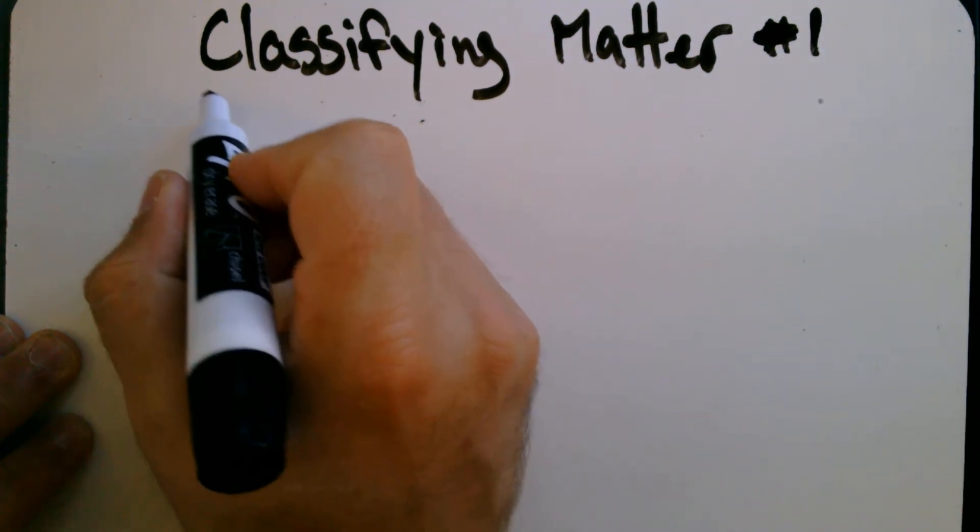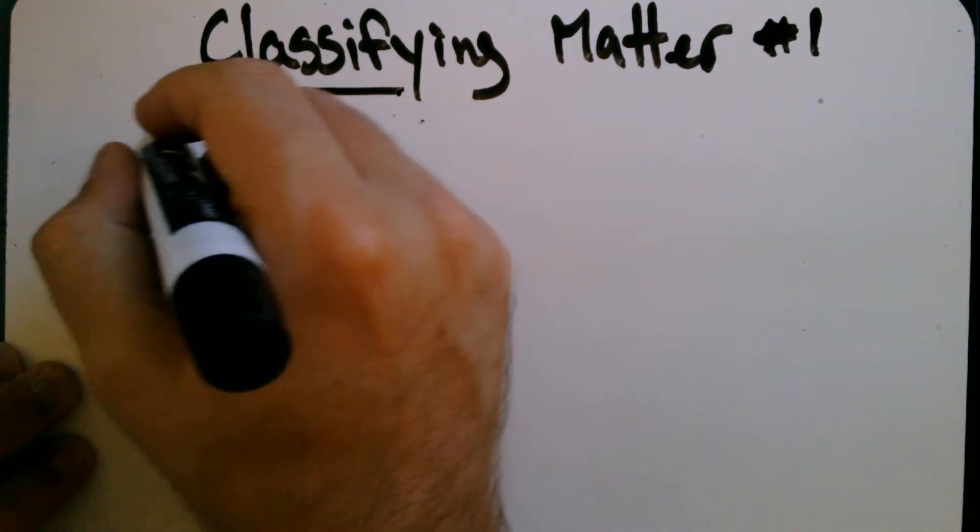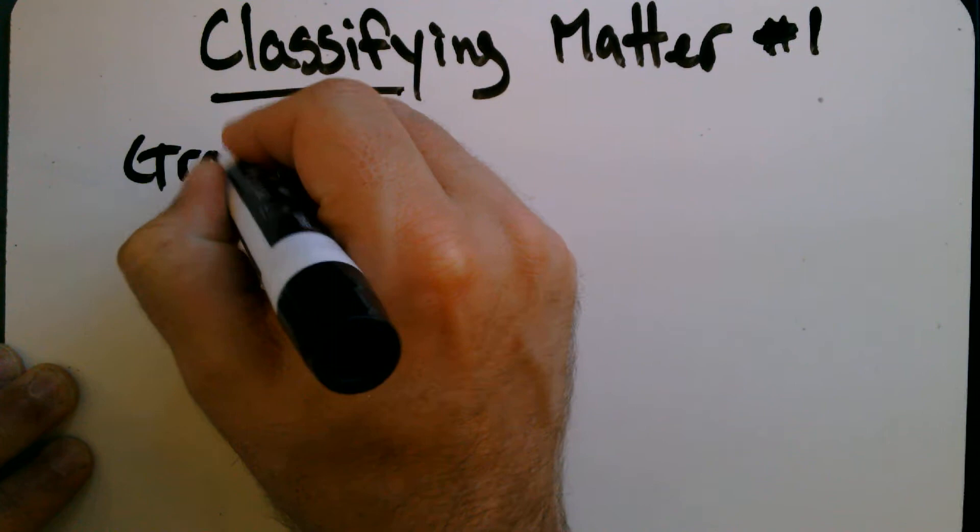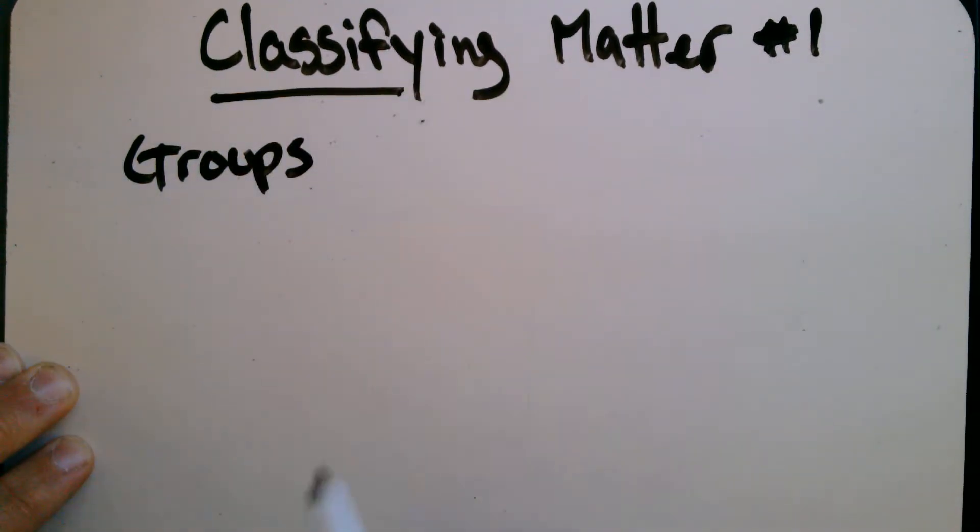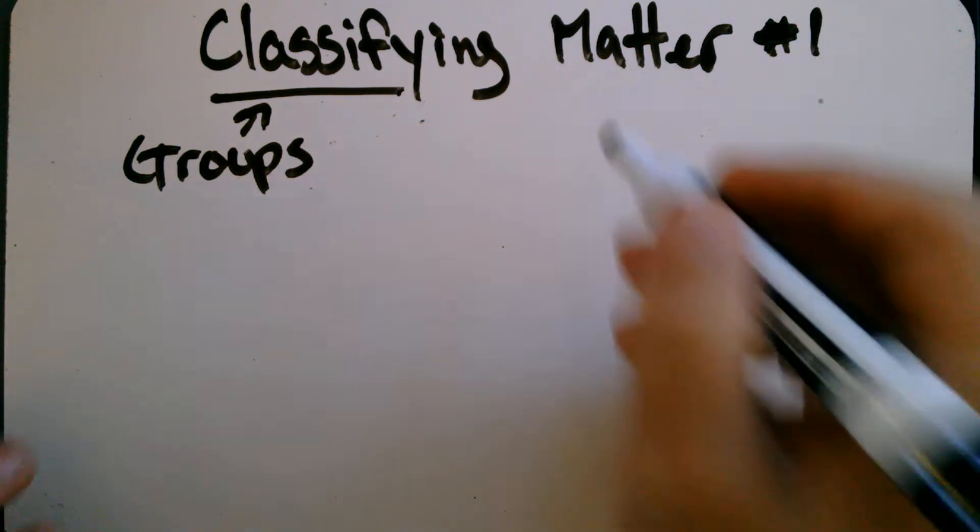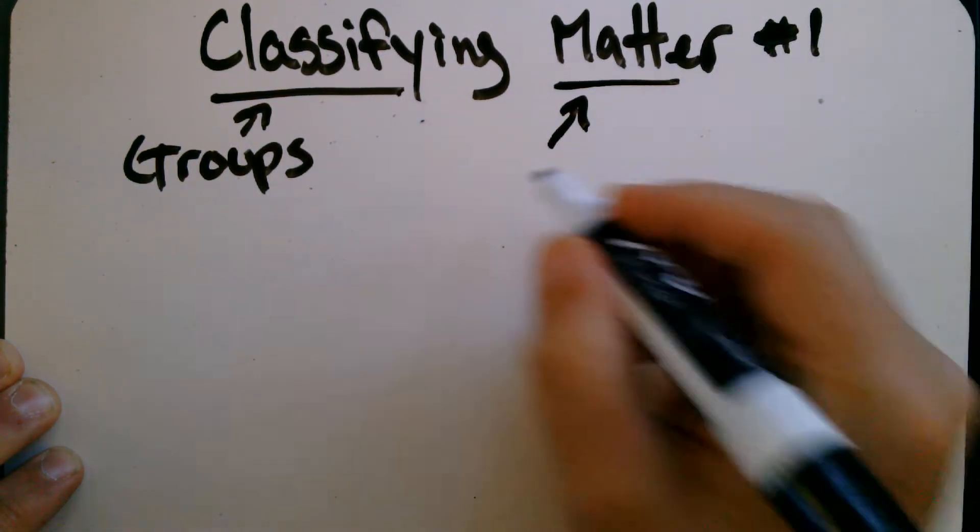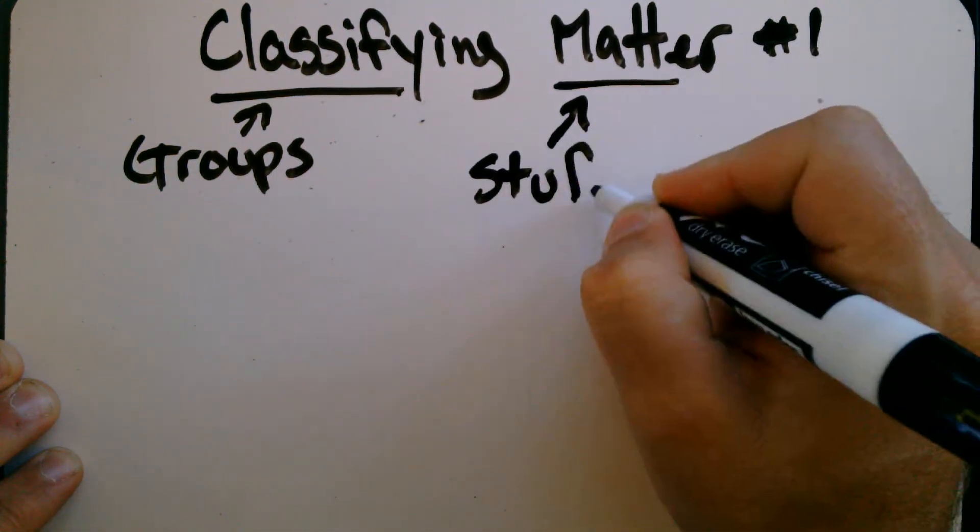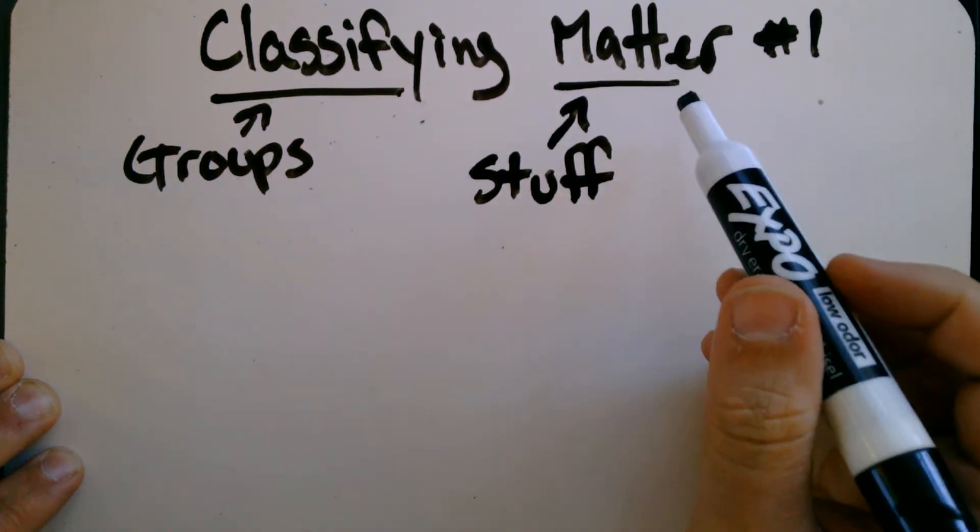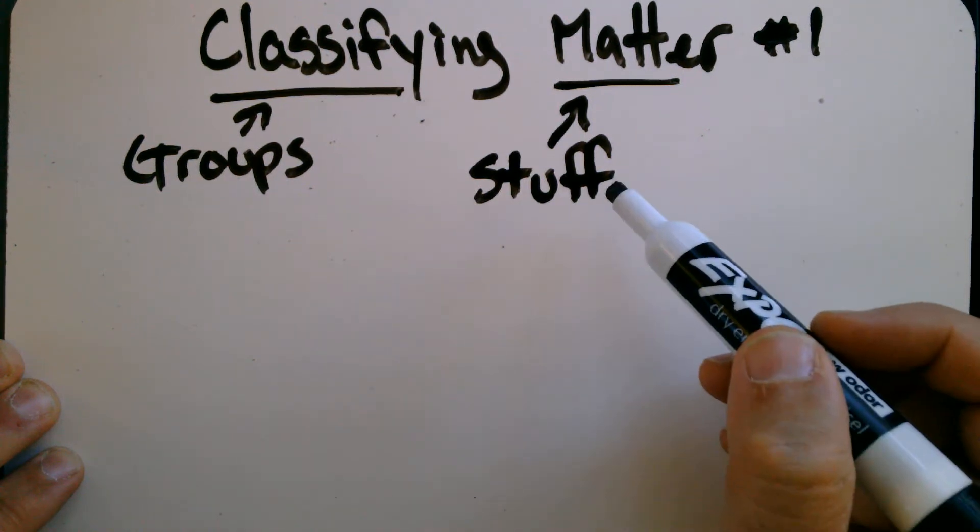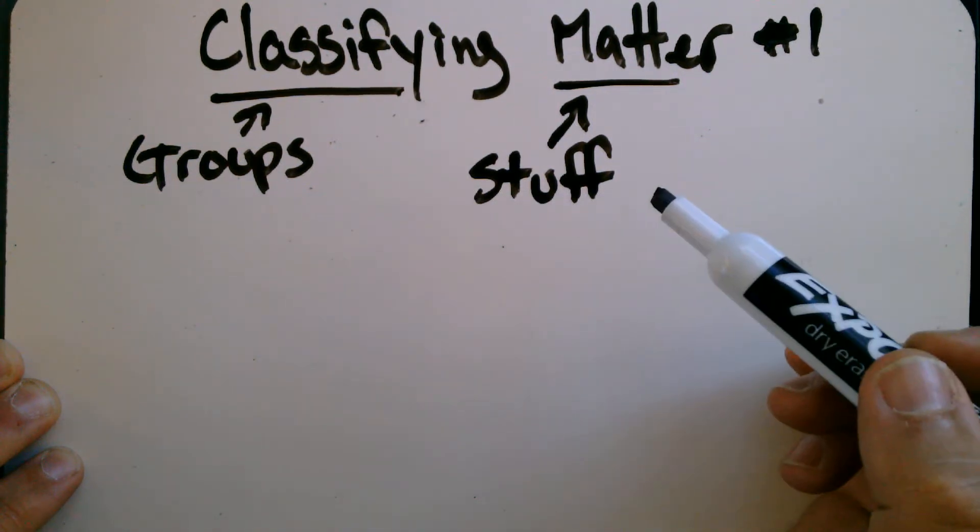So if you remember from the other day, when we classify something, that means to put it into groups. And we classify objects, things all the time, because it helps us to organize, to be more organized and to better understand things. All right, if you remember, matter, very technical scientific term, it really just means stuff.